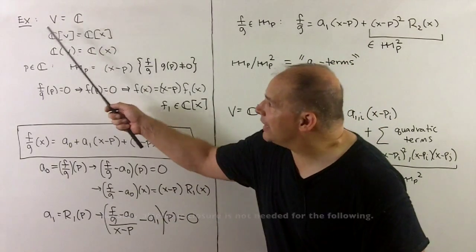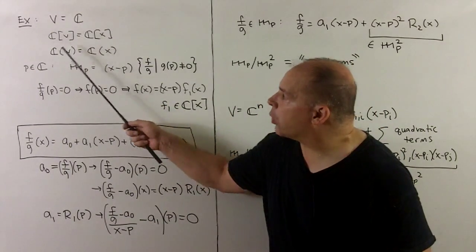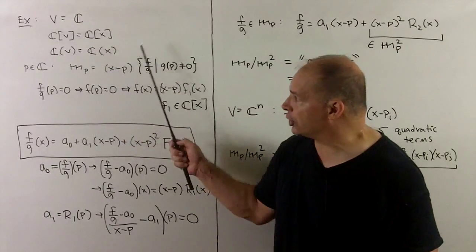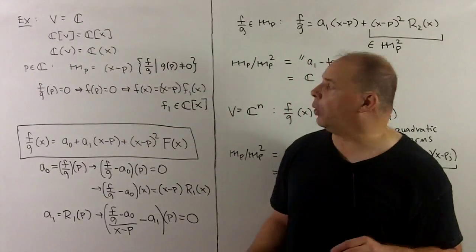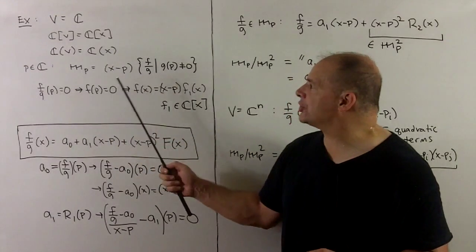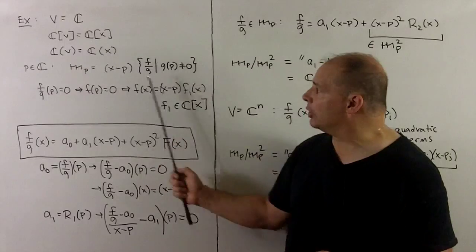That means V = C. Our coordinate ring is just polynomials in one variable. Our rational functions are rational functions in one variable. We pick a point P in the complex plane. Then the maximal ideal is just (X - P) times the local ring.